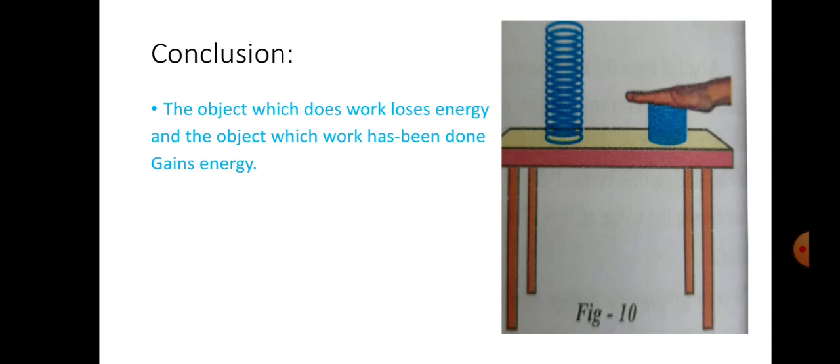The object which does work loses energy and the object which work has been done gains energy. Here, work is done by the palm. Work has been done on the spring. In this way, your palm loses energy and the spring gains energy.